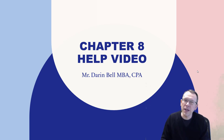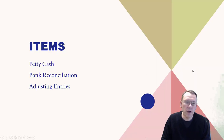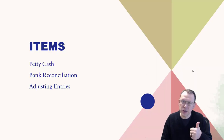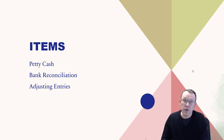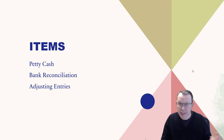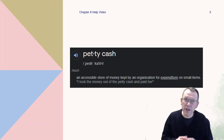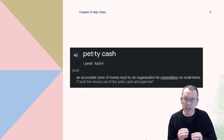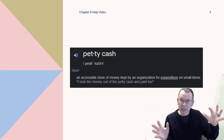Hello, welcome. I'm Darren Bell and I'm going to be walking you through the chapter 8 help video. In this video we are going to be talking about petty cash — how that actually occurs, how we keep track of it, and how to reconcile petty cash. We're going to talk about the bank reconciliation as well, and also the adjusting entries that come out of the bank reconciliation.